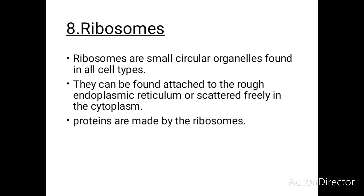Ribosomes are small circular organelles found in all cell types. They can be found attached to the rough endoplasmic reticulum or scattered freely inside the cytoplasm. The main function of the ribosomes is to make proteins.